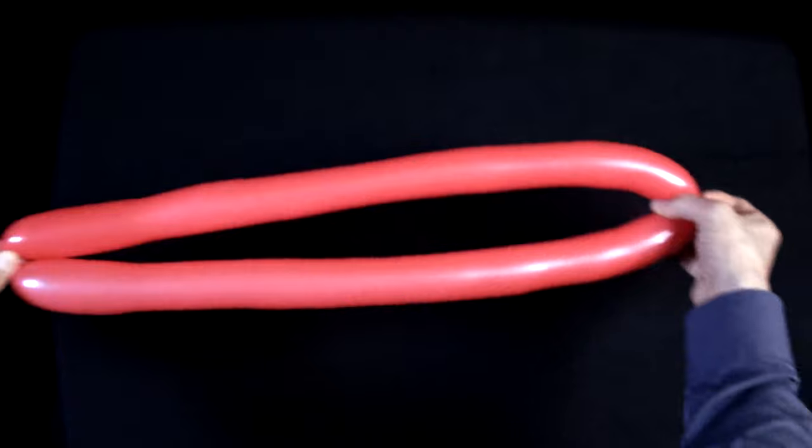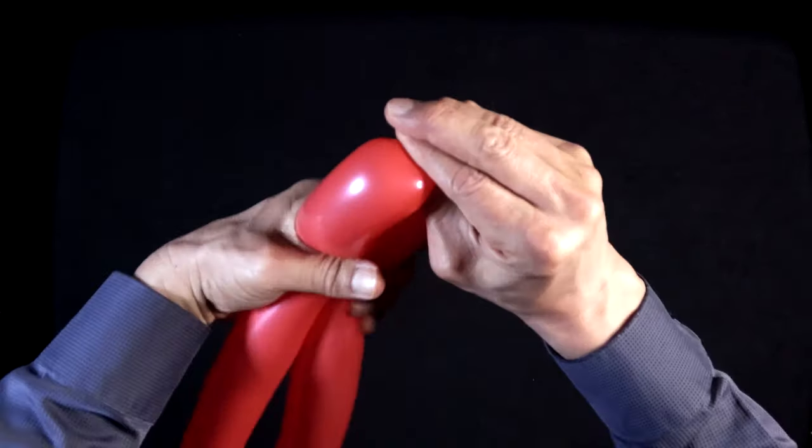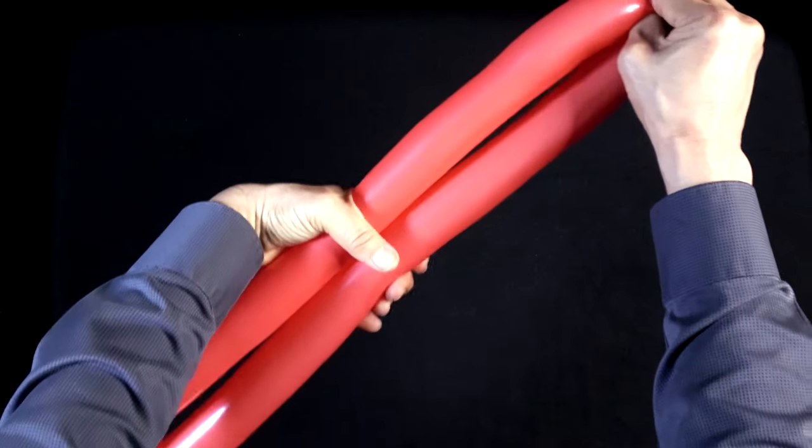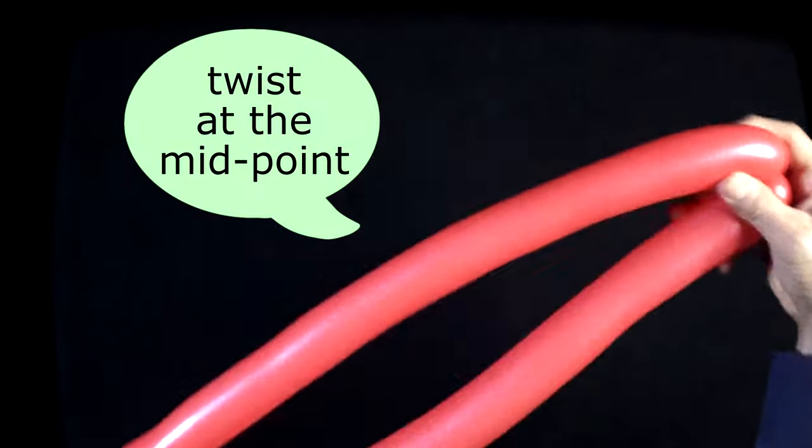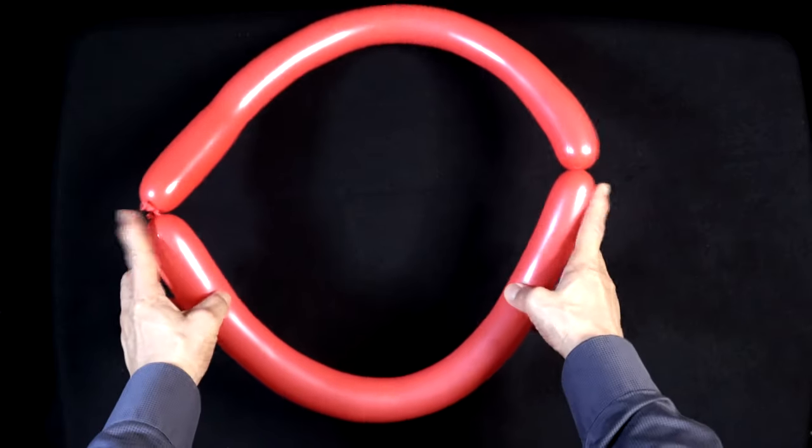You have your balloon here forming a loop. Now you're going to find the midpoint, which is right about here. Try and make sure the air is evenly distributed through the balloon. You'll have pretty much a circle that's broken into two twists here.